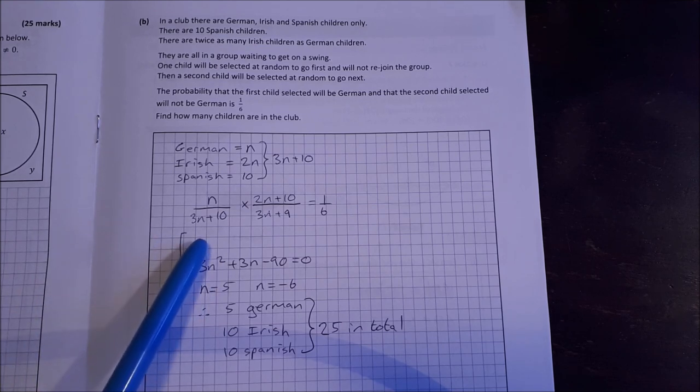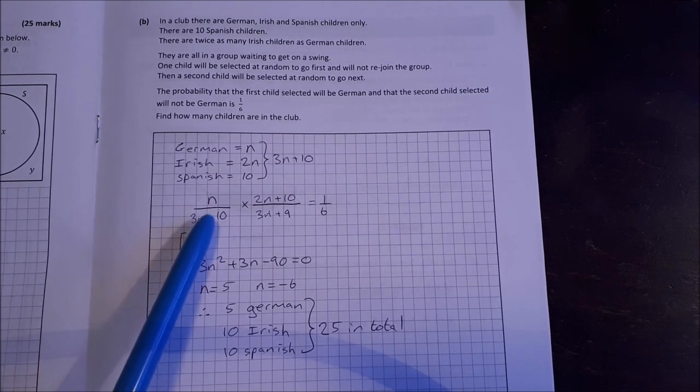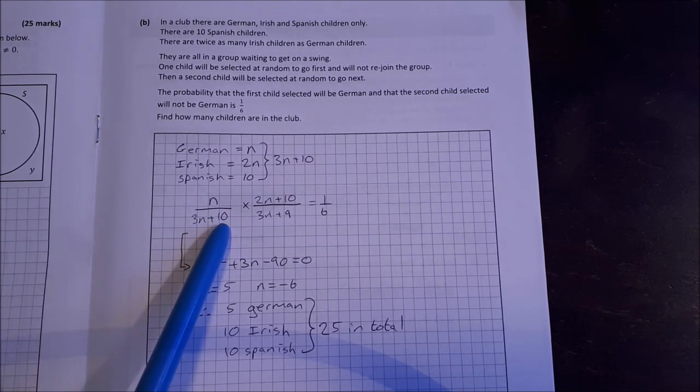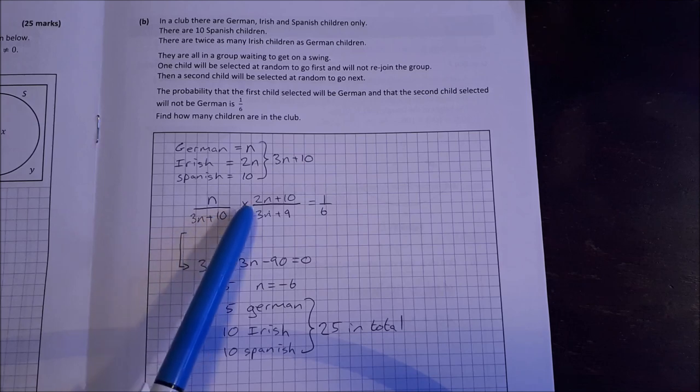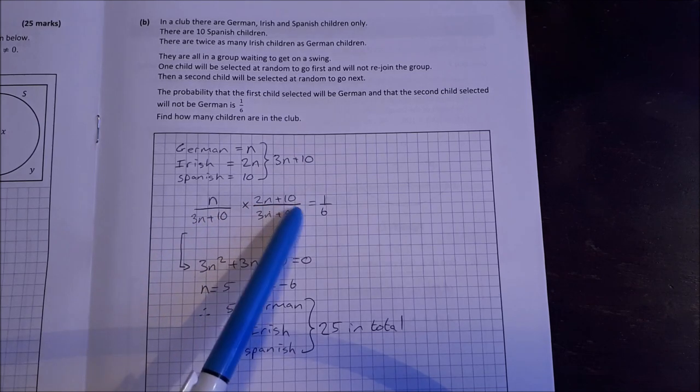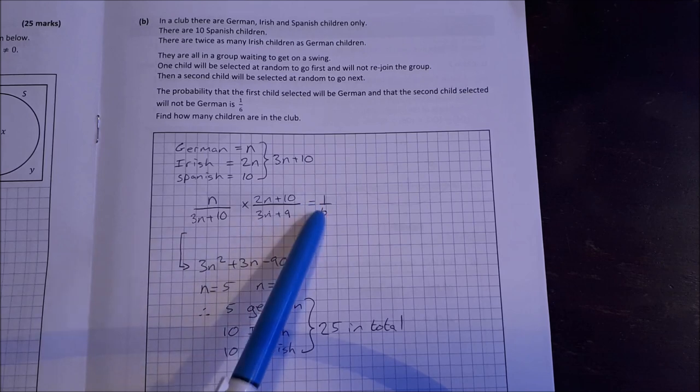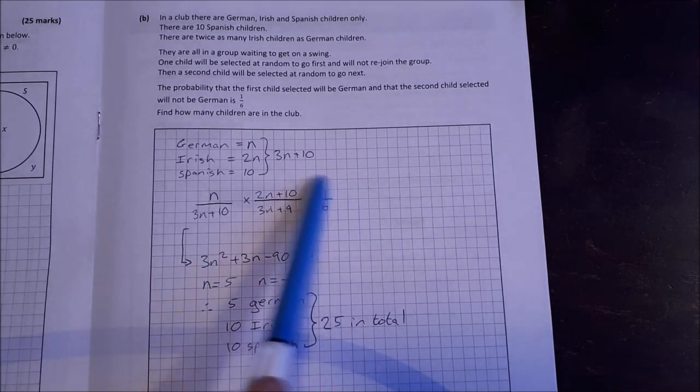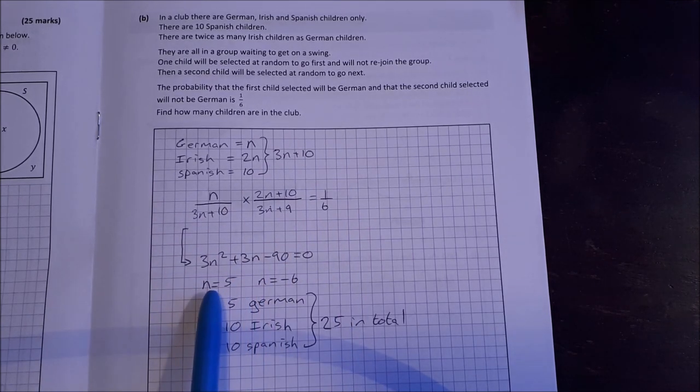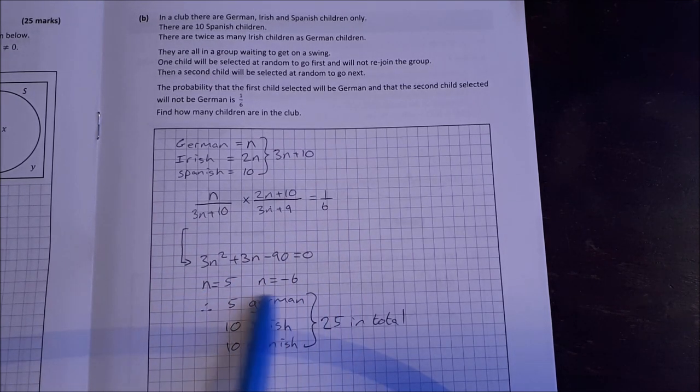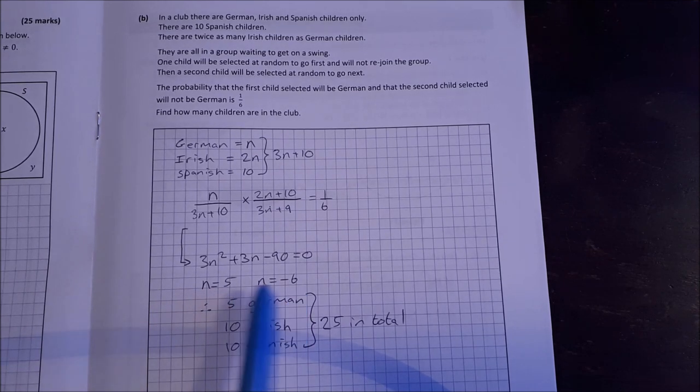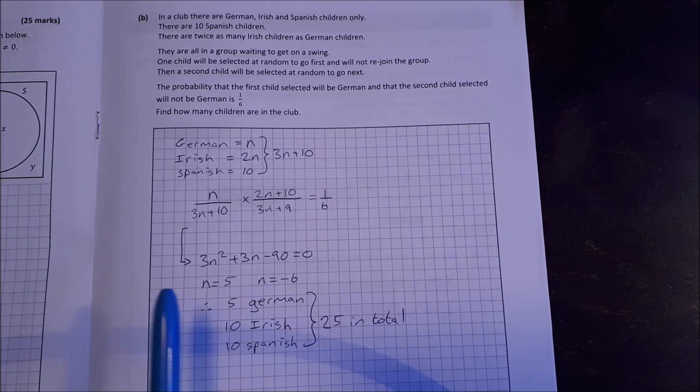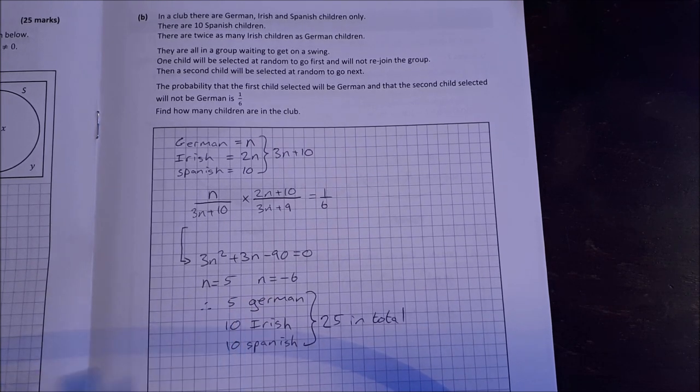The probability of the first one being German is N out of 3N plus 10, and the second being not German, that leaves us with 2N plus 10 over 3N plus 9. Multiply them together, the answer will be 1 over 6. Multiply this out, you get a quadratic and we can solve the quadratic, get N equal to 5, N equal to minus 6. Obviously we know it's going to be a positive number because you can't have minus 6 children. So N is 5, that means 5 German, 10 Irish, 10 Spanish, 25 in total.